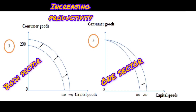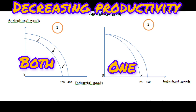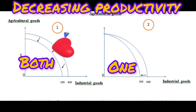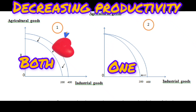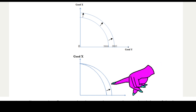Increased productivity allows an economy to produce more with the same resources, shifting the PPF outward. Conversely, a decrease in productivity shifts the PPF inward. Examples of productivity increases include new technologies and training programs for workers; decreases include use of outdated techniques and brain drain. If productivity increases in only one sector, the PPF shifts only on that side — for example, a boost in capital goods productivity moves that side of the PPF outward.